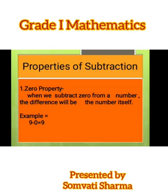Now, properties of subtraction. What are the properties of subtraction? First is the zero property. When we subtract zero from a number, the difference will be the number itself. Here you can see the example. We are going to subtract zero from nine, so the answer is the number itself, nine only.